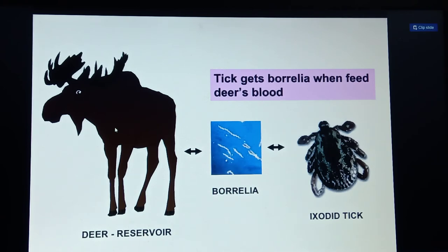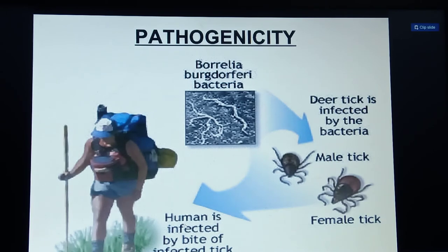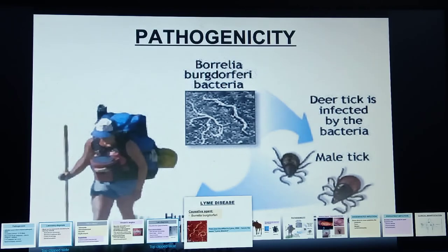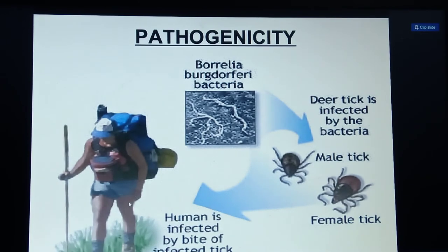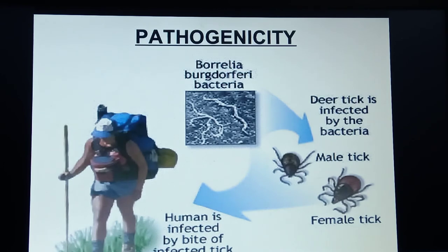In the pathophysiology of Lyme disease, the tick becomes infected with Borrelia burgdorferi after feeding on deer blood. Whether male or female, the infected tick then transmits the infection to humans through its bite, causing Lyme disease in the human host.